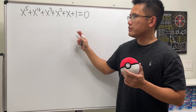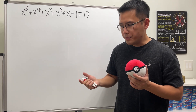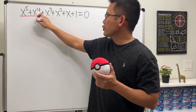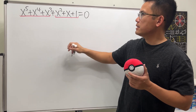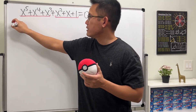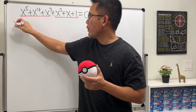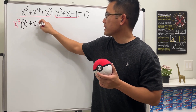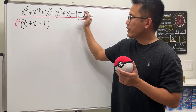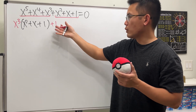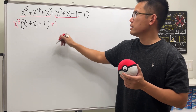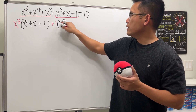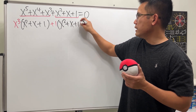Let's do this by factor by grouping. We'll go ahead and group the first three terms and then the last three terms. From here we can factor out x to the third power, and then we get x squared plus x plus one left. On the right side we factor out one, and we still have x squared plus x plus one.